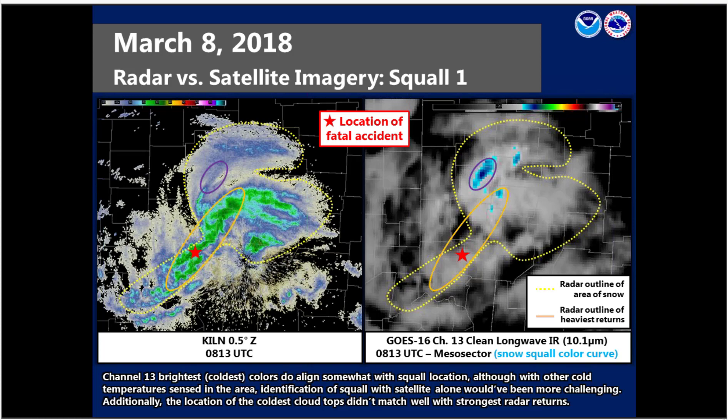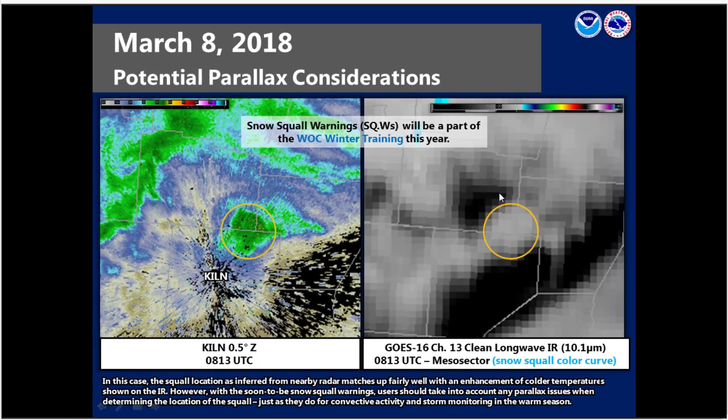Additionally, the location of the coldest cloud tops didn't match well with the strongest radar returns. However, utilization of the BTV snow squall color curve may help highlight those features a bit more and show where the strongest cores are. I do recommend downloading it to your site and having it available during these types of events. It's also important to keep in mind potential parallax issues that might pop up — especially the farther north and west you go — as with convective events. So keep that in mind as snow squall warnings become more widespread this winter.